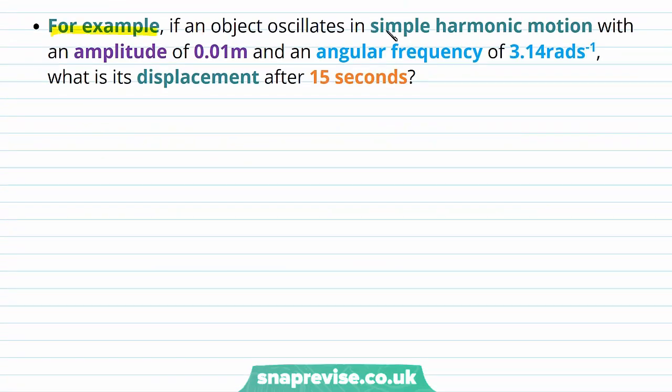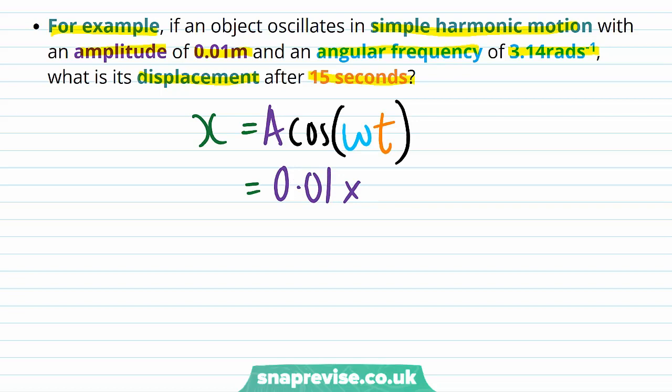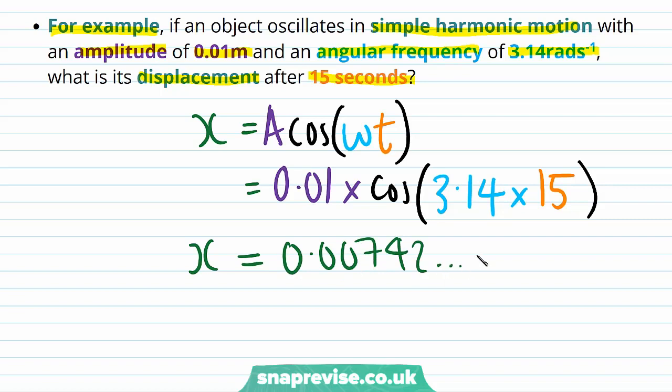For example, if an object oscillates in simple harmonic motion with an amplitude of 0.01 meters and an angular frequency of 3.14 radians per second, what is its displacement after 15 seconds? We use our equation for displacement as x is equal to a times cos of omega times t, and therefore x is equal to the amplitude a, which is 0.01, times cos of angular frequency, which is 3.14 times 15, because we want to look at what happens after a time of 15 seconds. And we find that displacement x is equal to 0.00742 meters, which is 7.4 times 10 to the minus 3 meters to two significant figures.